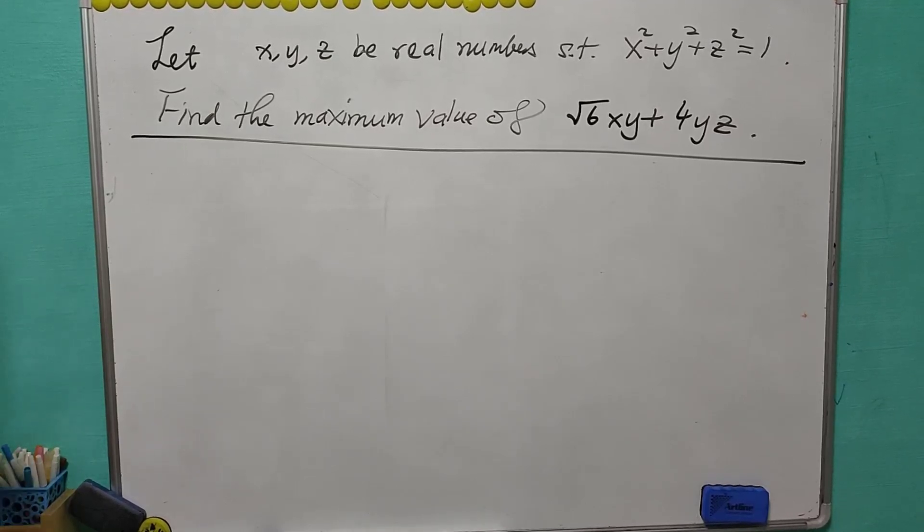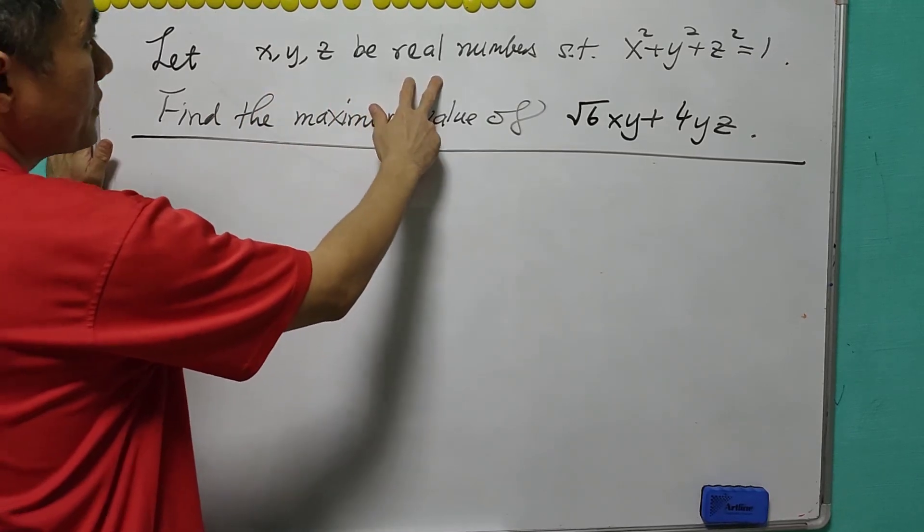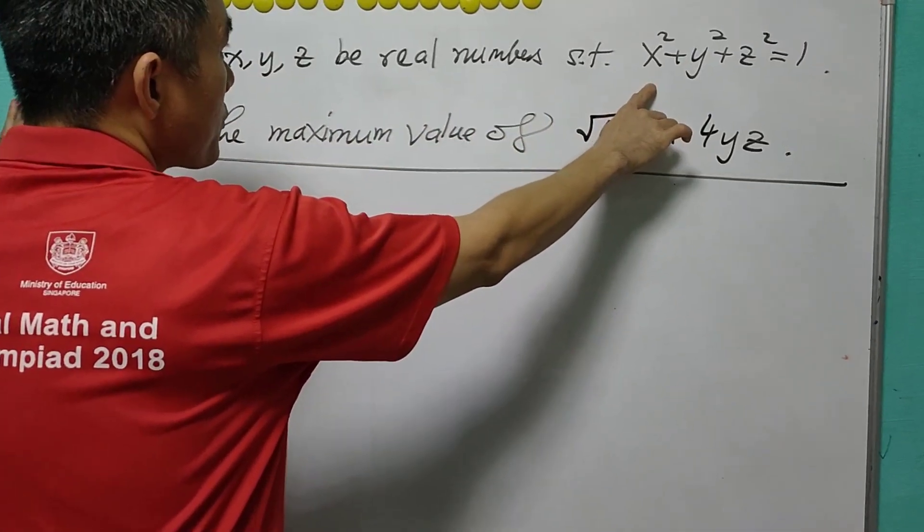For today, let's look at this inequality question. Let x, y, z be real numbers such that the sum of squares equals 1.